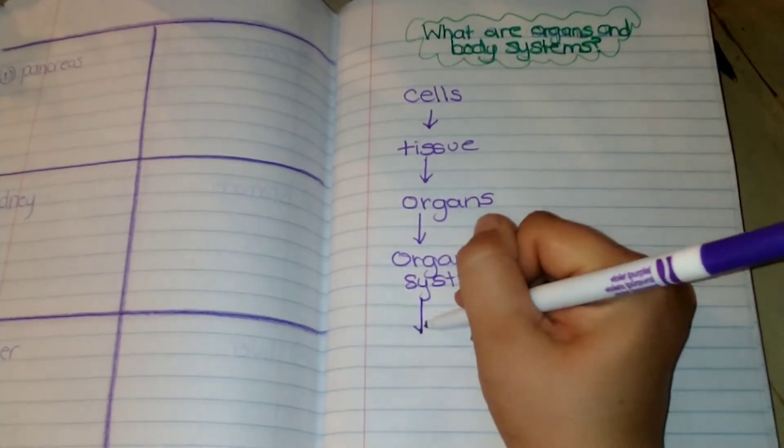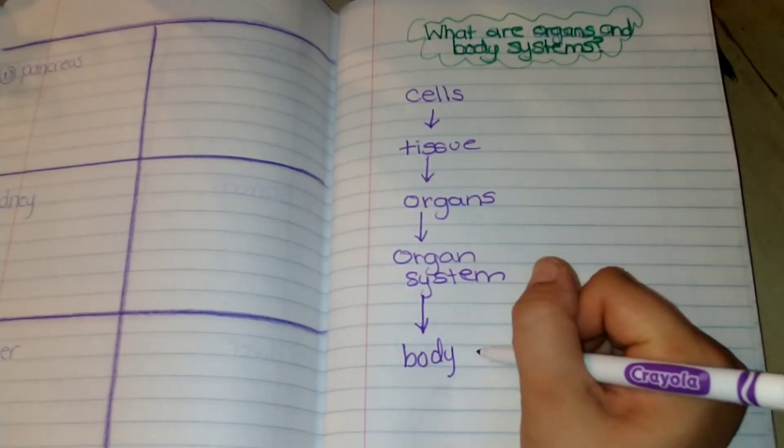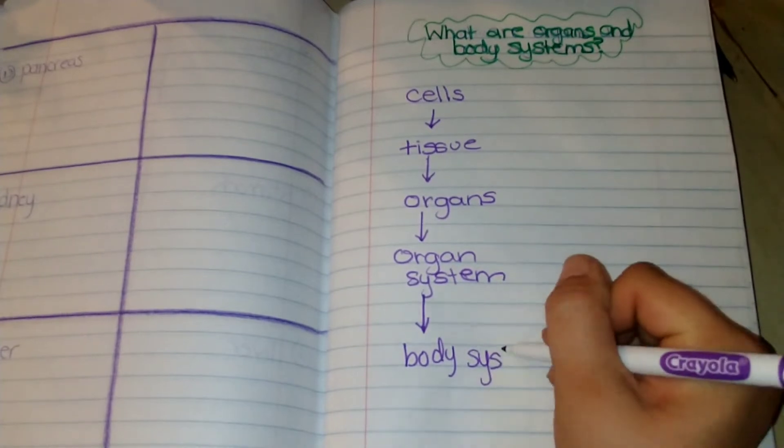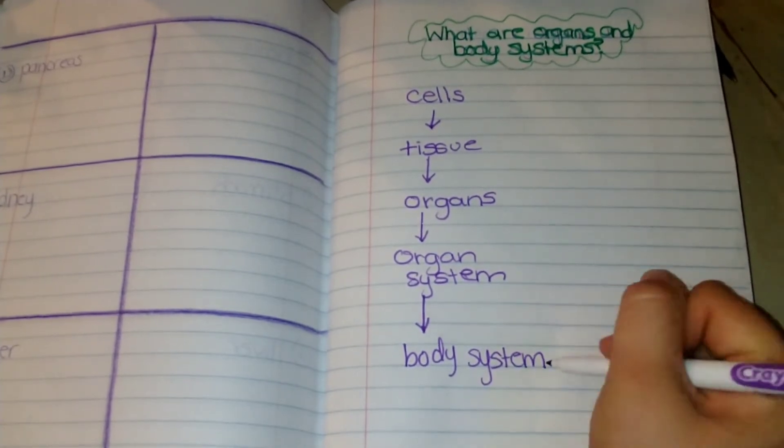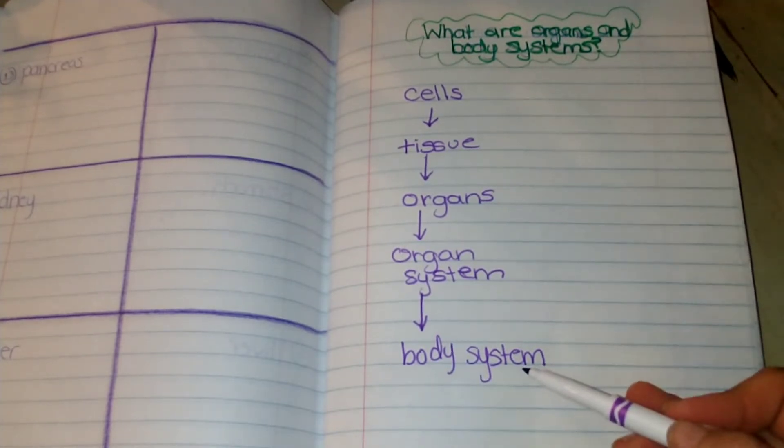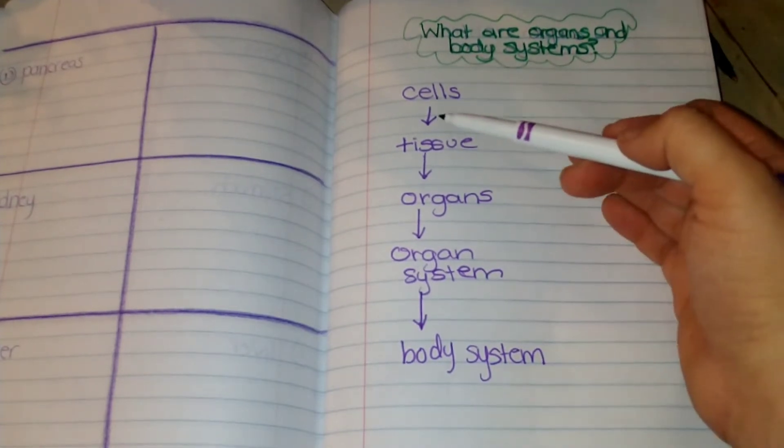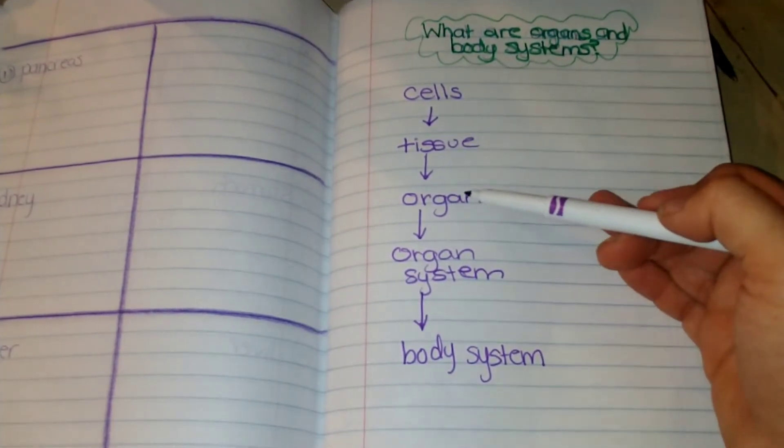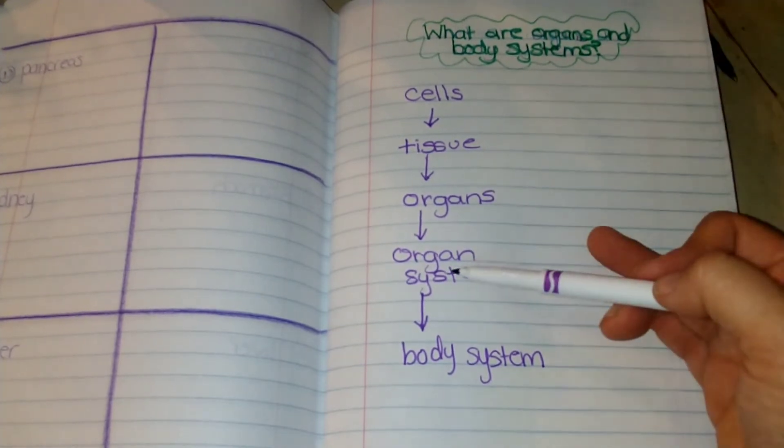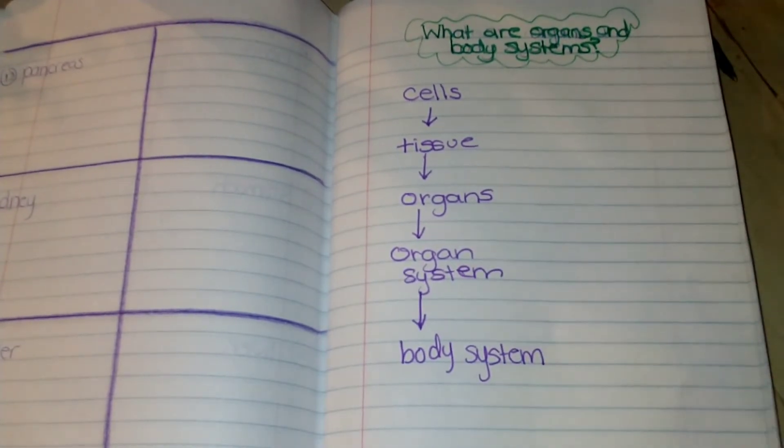And then organ systems come together to make a body system. Now the body system is the whole body working together with all of the other systems. If one system is not working, the body is not going to be working properly. So we have cells come together to make tissue, which come together to make organs, which come together to make an organ system, which all come together to have your body system work properly.